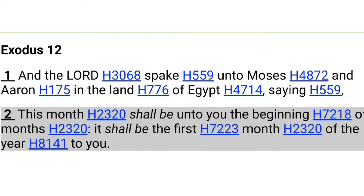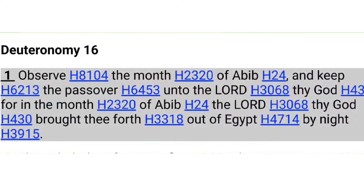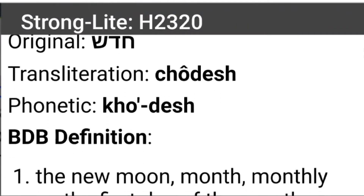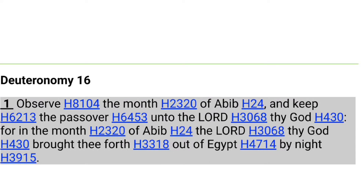Let's get a little bit more. Let's go to Deuteronomy chapter 16, verse 1: 'Observe the month of Abib and keep the Passover unto the Lord thy God, for in the month of Abib the Lord thy God brought thee forth out of Egypt by night.' Going to that word 'month' again — it's H2320, the same word, chodesh — and it means: the new moon, month, monthly, the first day of the month, the lunar month. So we see that also means the new moon.